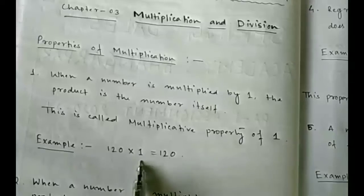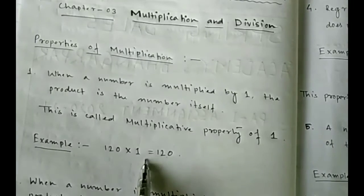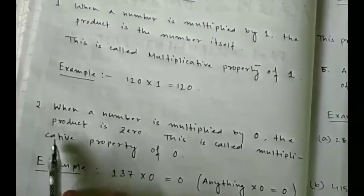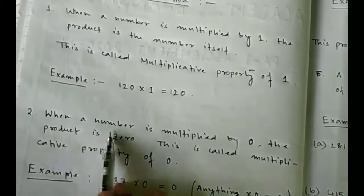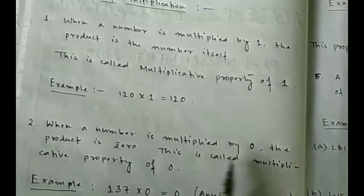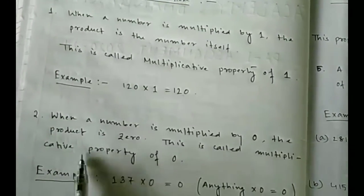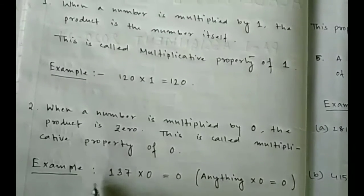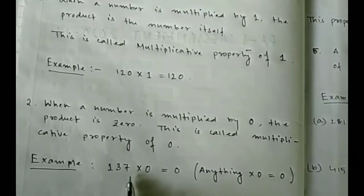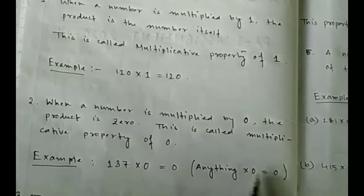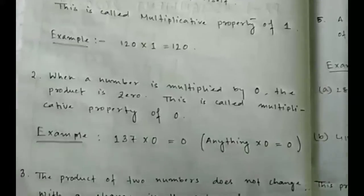Second property: when a number is multiplied by 0, the product is 0. This is called the multiplicative property of 0. For example, 137 into 0 is equal to 0, or anything into 0 is equal to 0.